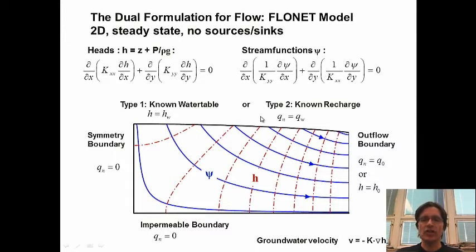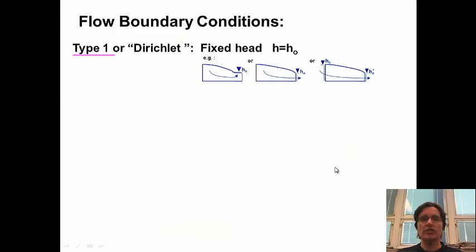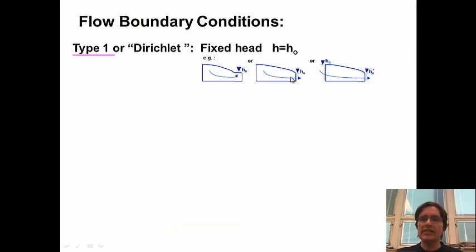We're interested in hydraulic heads and eventually velocities, focusing on the flow system first. Summarizing boundary conditions: Type 1 or Dirichlet is a fixed head. Here are some configurations in a 2D vertical model context — flow discharging to a river where we fix the hydraulic head at the river or lake. Even if the lake is there we might have some underflow, so we can fix the head along a vertical face. We might have inflow along the up-gradient face if it's not a symmetry boundary — we can fix the hydraulic head there too.